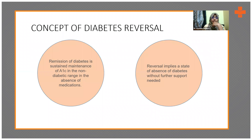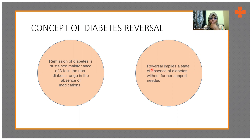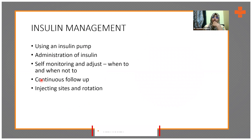When talking about diabetes reversal, we have to be careful with two terms: remission and reversal. Remission is the maintenance of A1C within range in the absence of medication, while reversal is the absence of diabetes without further support. In remission, patients still need further support. I am not a firm believer in reversal, but I do believe in remission, because I have seen people who enter a state of remission through good lifestyle control.